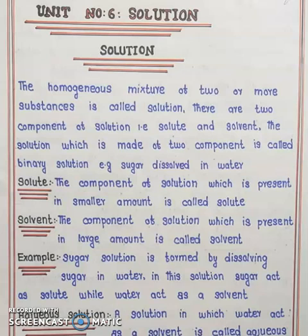The homogeneous mixture of two or more substances is called solution. There are two components of solution: solute and solvent. The solution which is made of two components is called binary solution. For example, sugar dissolved in water.